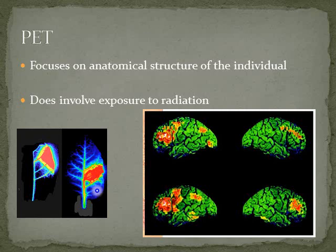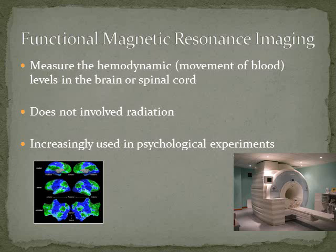This is a modern PET scan view of a brain. Functional magnetic resonance imaging measures the hemodynamic movement of blood through the brain and spinal cord, and does not involve radiation — unlike PET scans, which can be a concern for some people. fMRIs are increasingly being used in psychological experiments because you can interact with an individual and then watch how the blood flow in their brain changes in reaction to social interaction. They're really cool and becoming very popular.